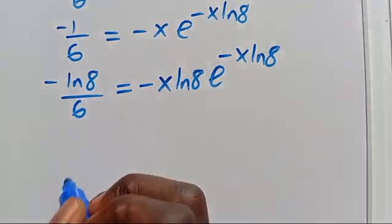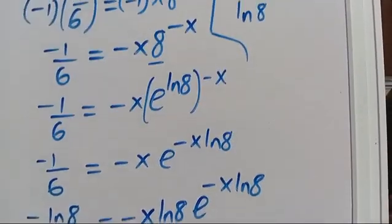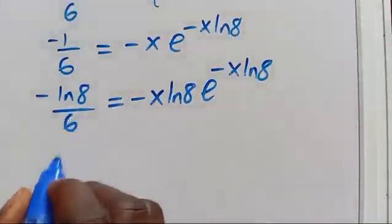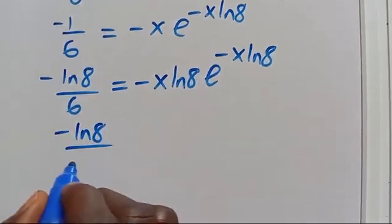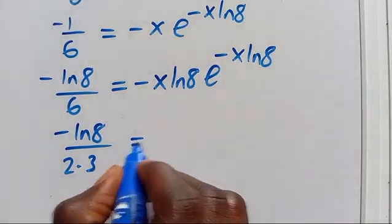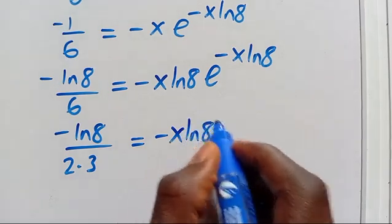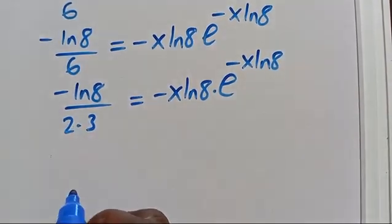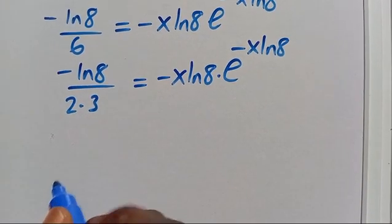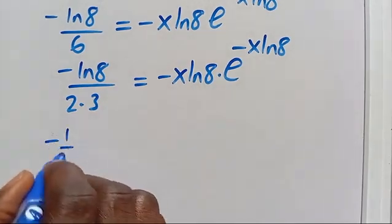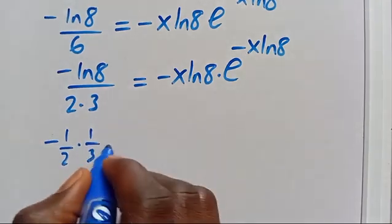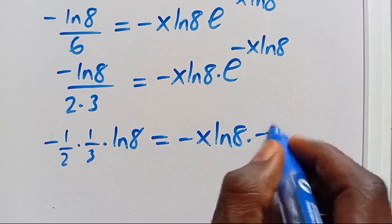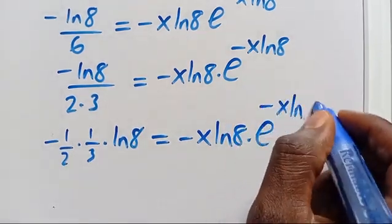Let's do some manipulation here. Recall that we can have 6 as the product of 2 times 3. So we can write minus ln(8) divided by 2 times 3, which equals minus x times ln(8) times e to the power of minus x times ln(8).